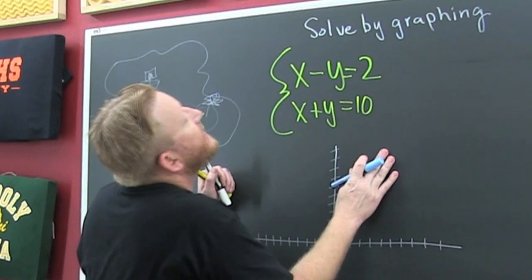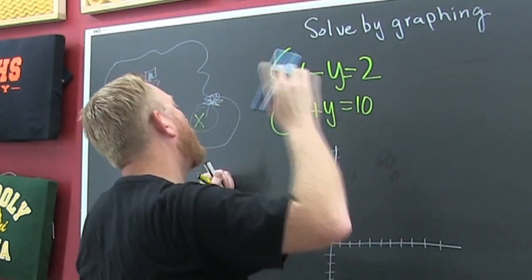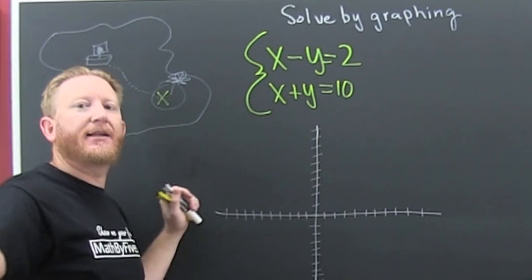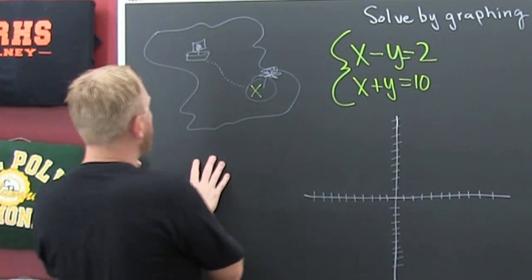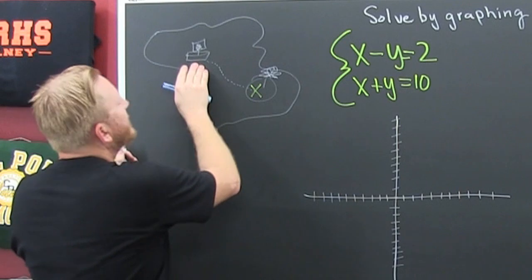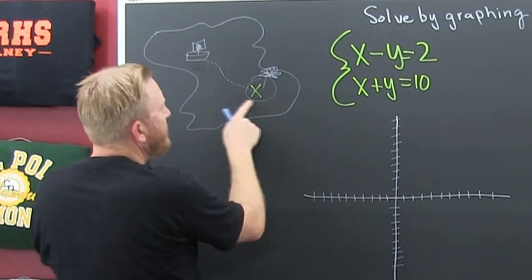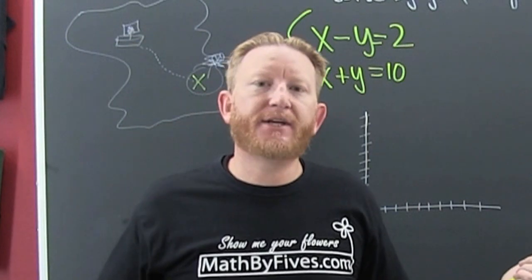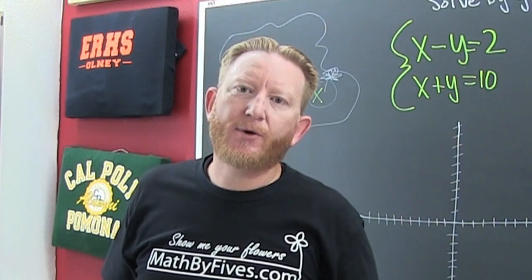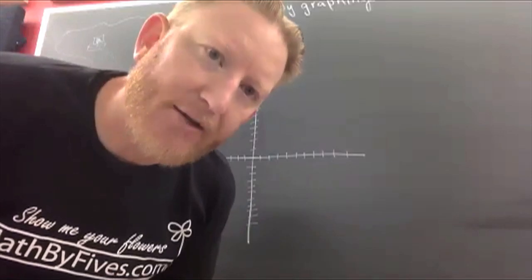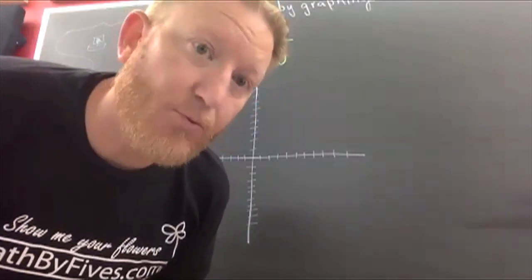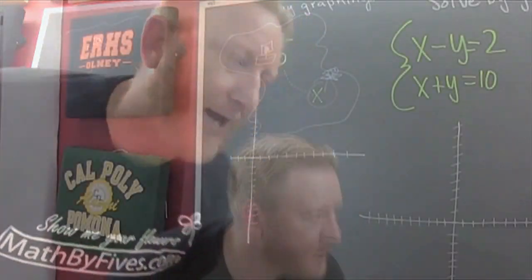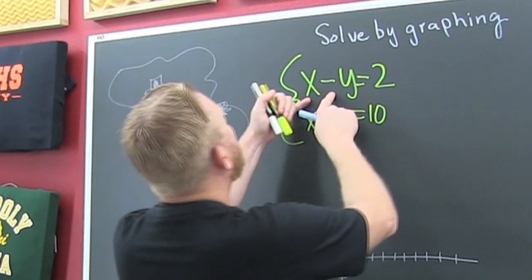Alright, what are we doing? Solve by graphing. It's kind of like a treasure map. If you were looking for the treasure, X marks the spot. So I have a system of linear equations, and I'm gonna graph them so that I could find where they cross. If they cross — where they cross, like on that map — that's where the treasure's at. That's the solution. That's what we're looking for here.